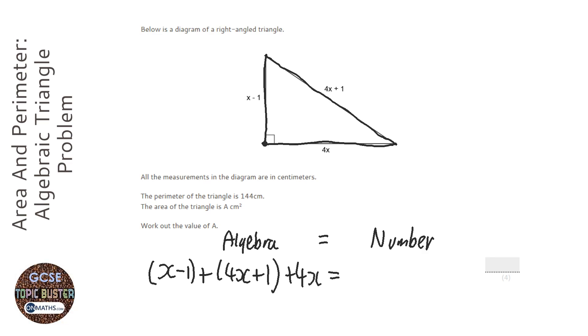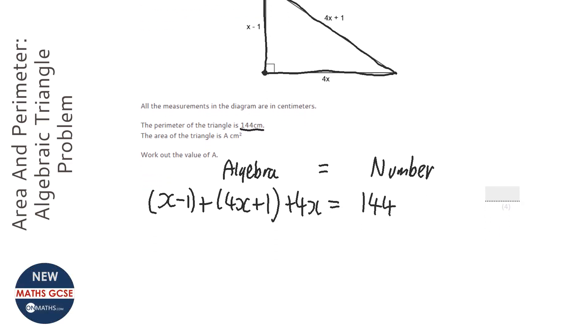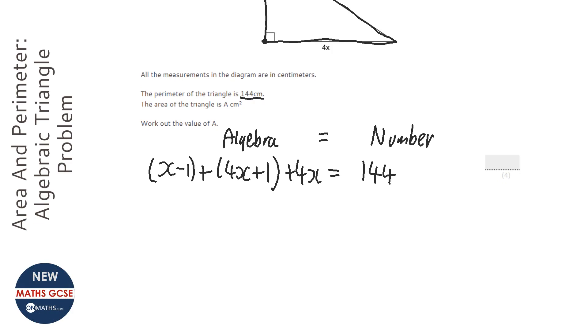Now as a number, it says that it is 144, and there we go. We've got ourselves an equation to be able to solve and find out what x is.